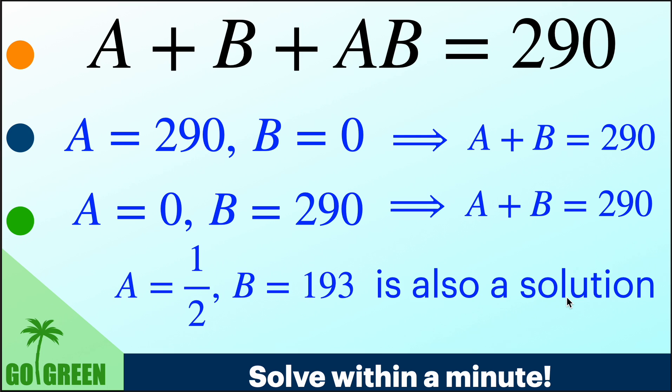Now, if we take A to be half simply and B to be 193, you can check that again this identity holds. So basically A equal to half B equal to 193 is also another solution.